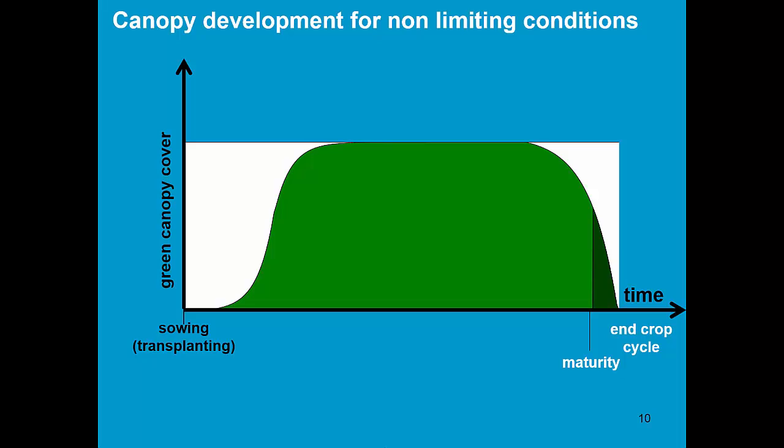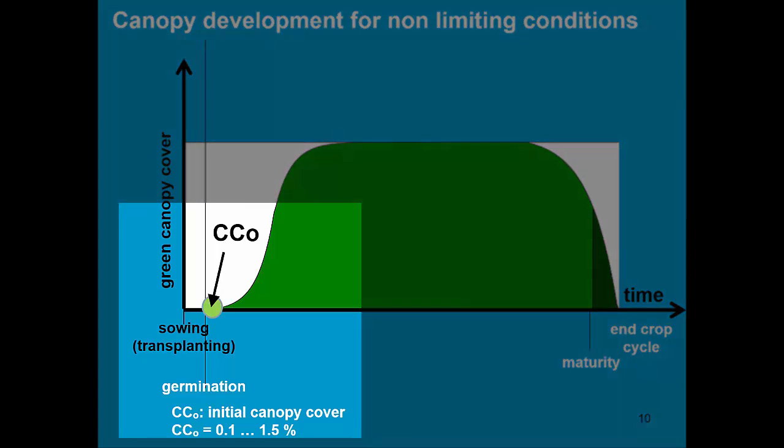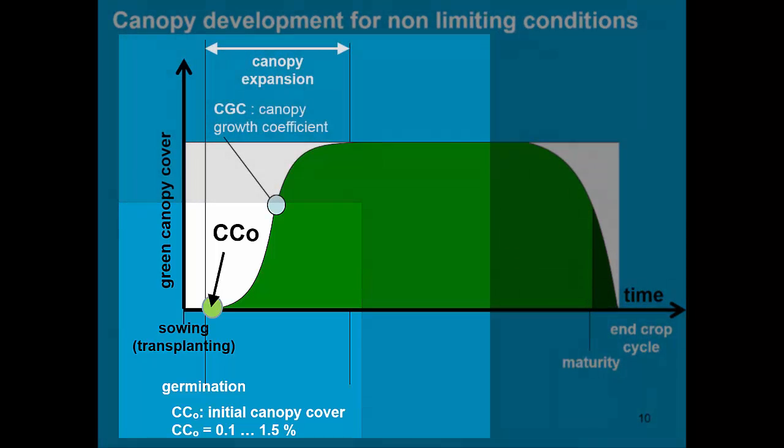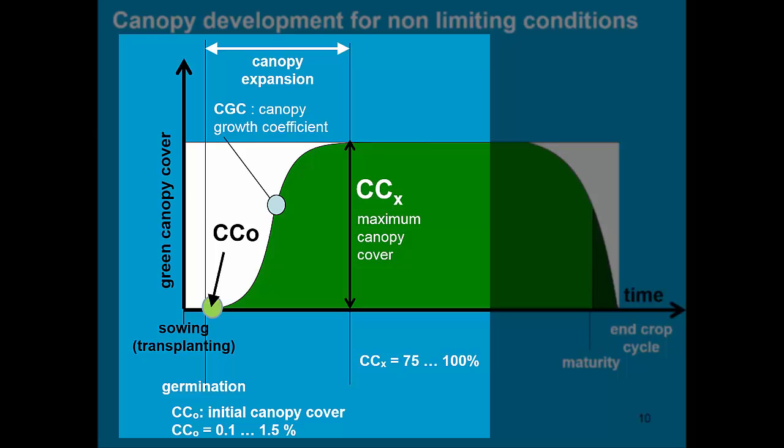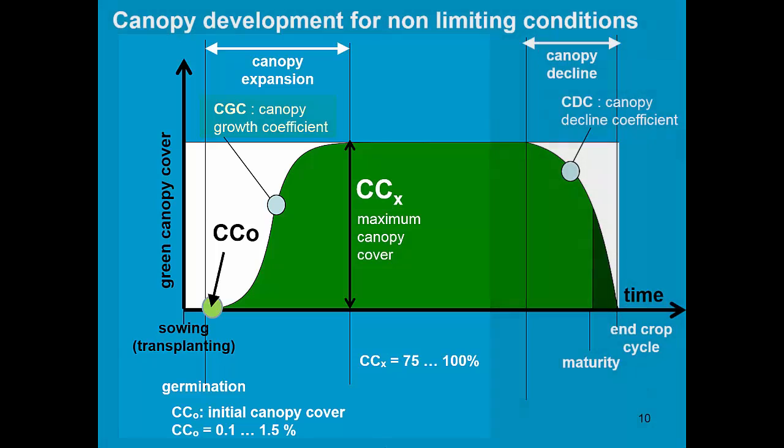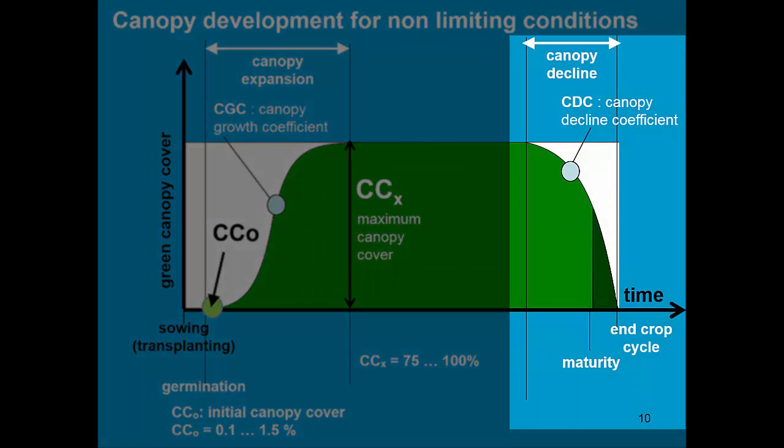The canopy development for non-limiting conditions is given in the crop file. In the crop file, the user specifies the planting density, which determines the initial canopy cover. It determines as well the maximum canopy cover that can be reached. The maximum canopy cover is reached in the crop development stage and is described in AquaCrop with the help of a canopy growth coefficient.